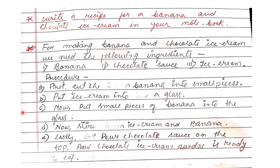Next is recipe writing. Write a recipe for a banana and chocolate ice cream sundae in your notebook. For making banana and chocolate ice cream, we need the following ingredients: banana, chocolate sauce, and ice cream. Now we will see the procedure — how it is made.